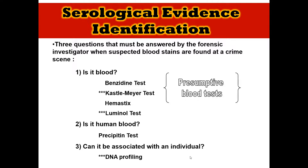The second question that's going to be asked by investigators, after they confirm that they have blood, is whether they have actual human blood. They're going to want to sample that blood and send it off for DNA analysis. They might also use it for blood typing purposes, which we'll talk about today.